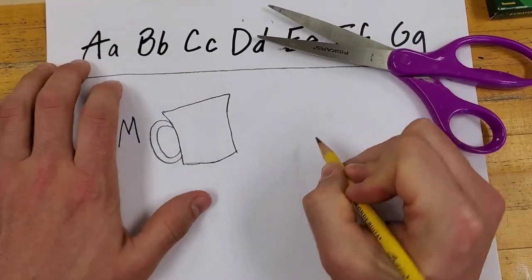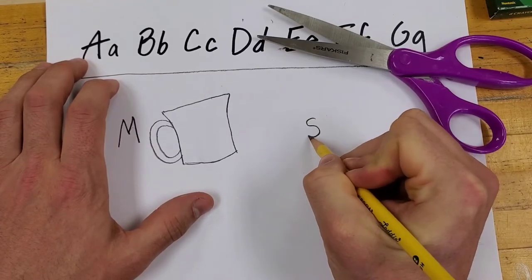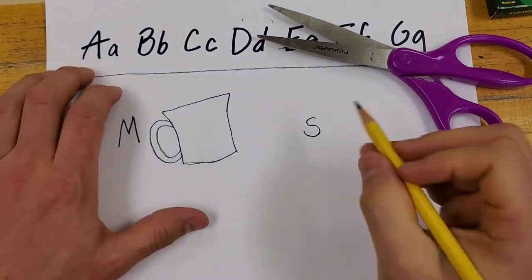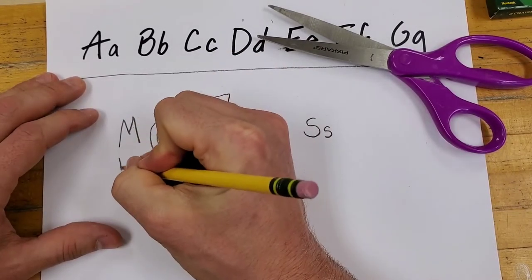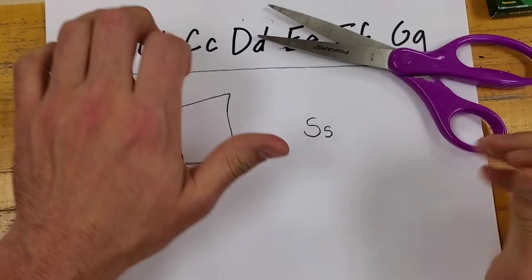So somewhere else on my paper, I'm going to give myself some space. I'm going to write the letter S. You could just do the capital. If you want to also add the lowercase, you could do that as well.